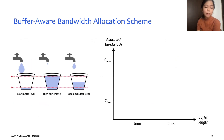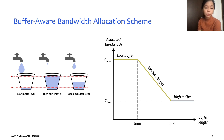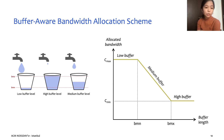Here we have a graph representation showing how the bandwidth allocation values are calculated for each of the three cases. For clients with a low buffer level, they are allocated the maximum allowable bandwidth, which we define as Cmax. For clients with a high buffer level, they are allocated the minimum allowable bandwidth, which we define as Cmean. For all other clients with a medium buffer level, they are allocated a bandwidth value that is negatively proportional to their buffer level, as shown in the graph.